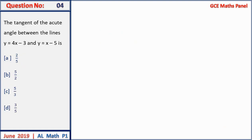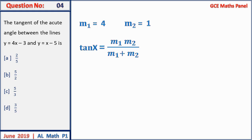Question 4: the tangent of the acute angle between the lines y = 4x − 3 and y = x − 5. The gradient of the first line is 4 and the gradient of the second is 1. The tangent formula is (m1 − m2)/(1 + m1·m2). Substituting values and simplifying gives 4/5. Unfortunately that answer is not among the options.